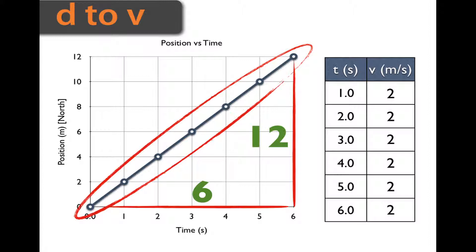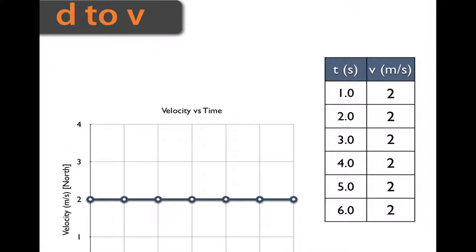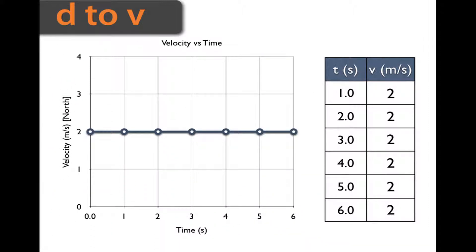Now we just need to plot this. Let's move this graph out of the way and put in our velocity-time graph. We simply took the time and velocity points and replotted them — that's all there is to it. In another video, I'll show you how to find the position from the velocity versus time graph. Until next time.